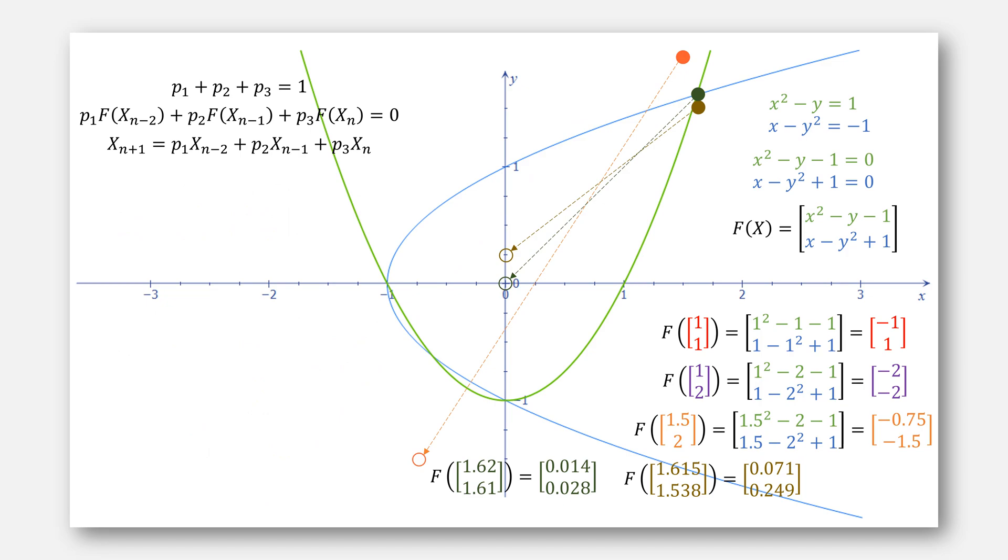We then repeat the process with the last three points, until our distance between our steps becomes less than some epsilon in the norm, or our function is close enough at that value, or reaches a maximum number of iterations.